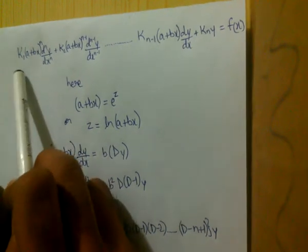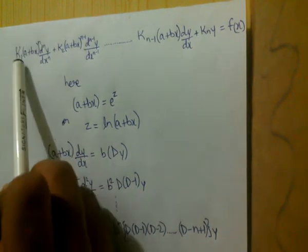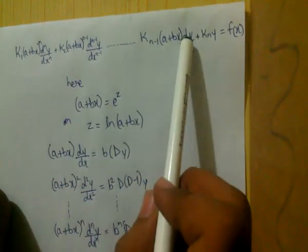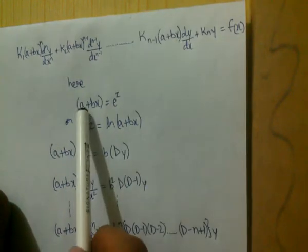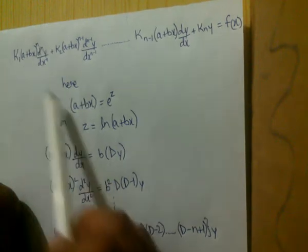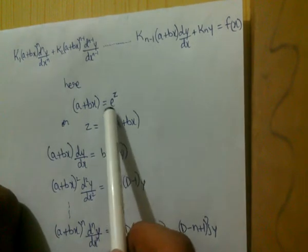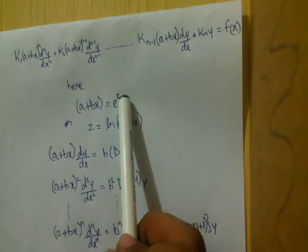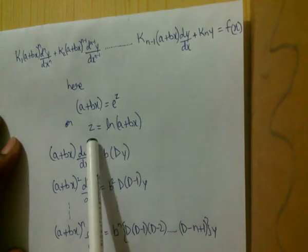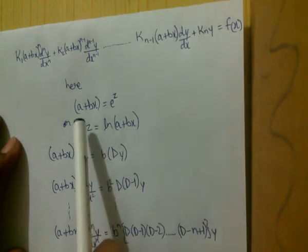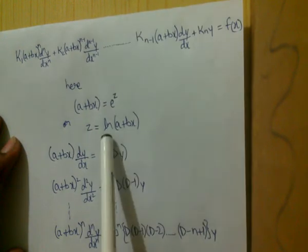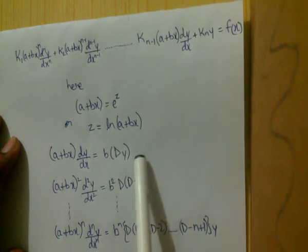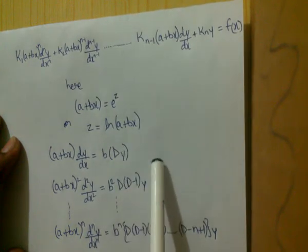As the constants increase, the value of n decreases. We assume that (a + bx) is equal to e raised to the power z, where z is another variable. Hence z becomes ln(a + bx), where ln is the natural logarithm to the base e.